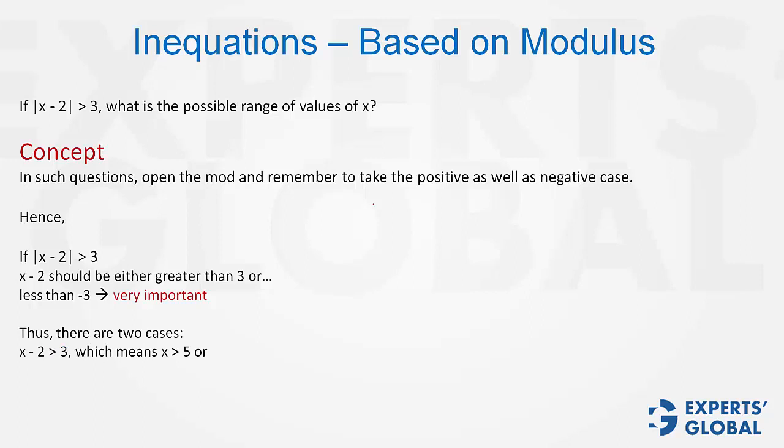Now, solve each of them. The first case suggests that x minus 2 is greater than 3, which means that x is greater than 5. And the second case is x minus 2 is less than minus 3, which means that x is less than negative 1. Therefore, the required answer is x is greater than 5 or x is less than negative 1.